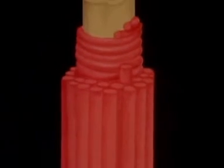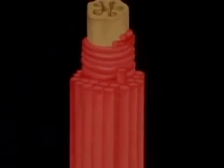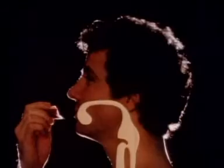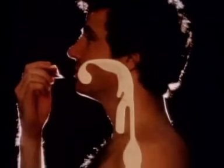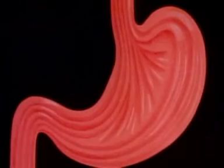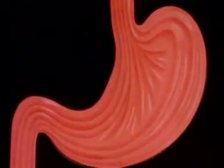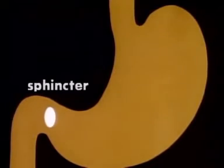In your esophagus there are two criss-cross layers of smooth muscle which help you swallow. These layers squeeze food down toward your stomach, where more smooth muscles churn the food. Then a ring-shaped muscle called a sphincter opens, and the food continues into your intestines, where it is squeezed farther along by more involuntary smooth muscles.